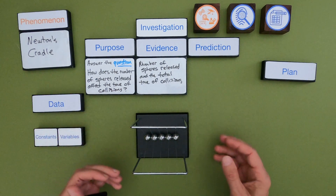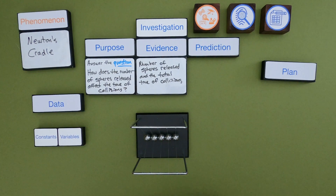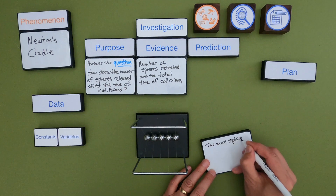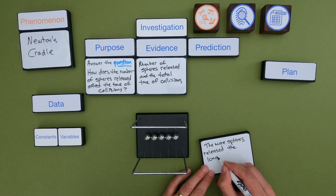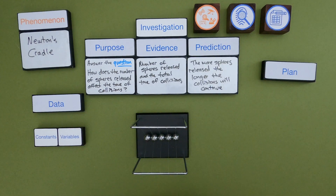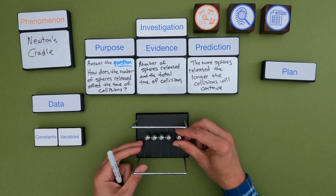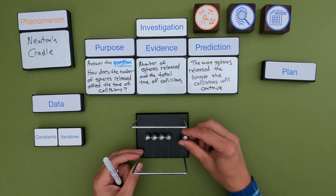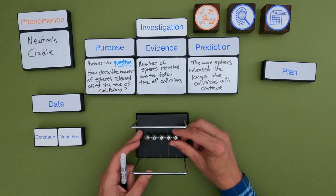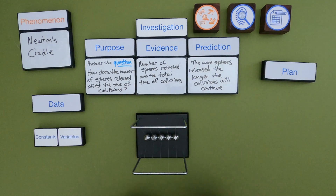Once I've done that, before I actually do the investigation, I want to make some kind of a prediction. What I'm thinking is the more spheres released — if I release one sphere — I think it will go longer or shorter than two spheres or three spheres. That's my prediction; that's what I'm thinking.